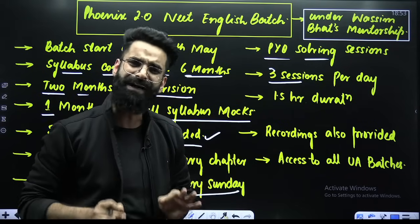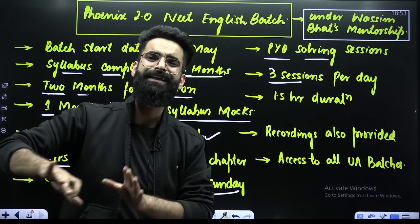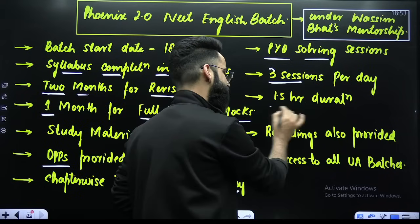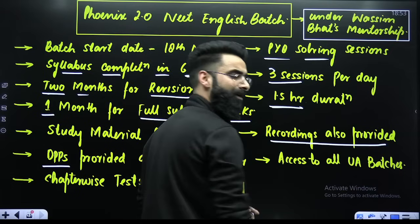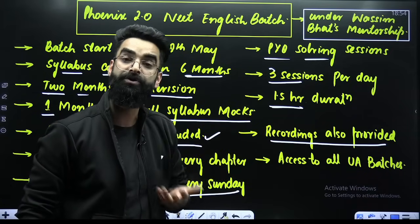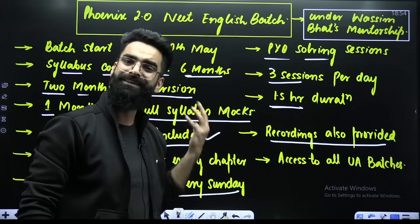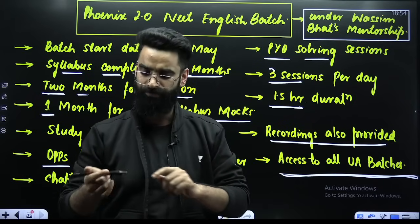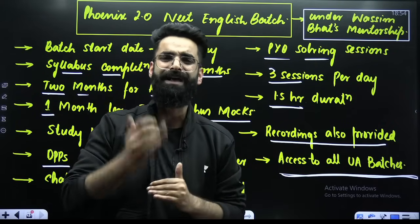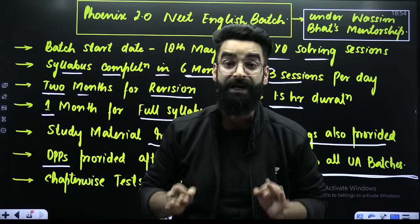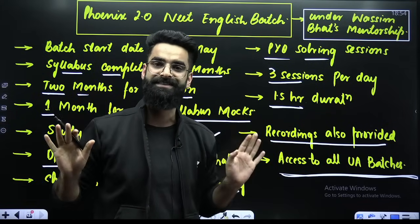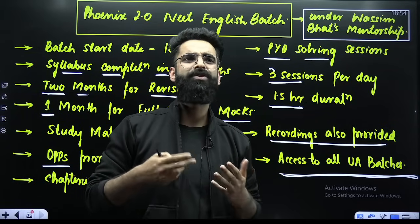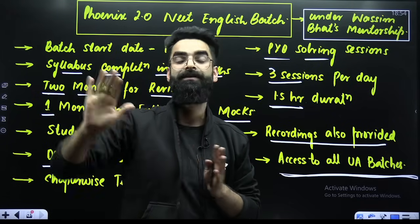There will be three sessions per day, every day, conducted in the evening time. These are going to be live sessions. And by chance, if anyone cannot join the live sessions, they have got access to check the recording of that particular session as well. Every session duration will be a minimum of 1.5 hours. Recordings are also provided of those live sessions. And the best part, my dear students: if you are getting enrolled in this Phoenix 2.0 NEET English batch, all the other batches on the Unacademy platform — be it NEET 2025, NEET 2026, in Hindi or English language — you'll be having access to all those batches completely free of cost. Because sometimes you want to study one particular subject from some other teacher, so we have kept that option available for you.